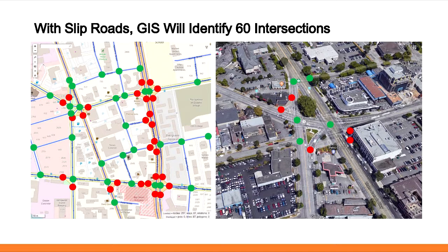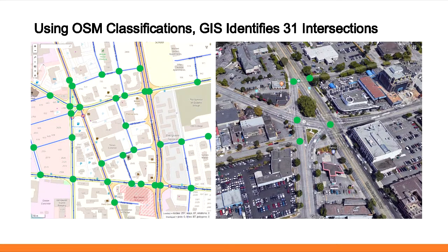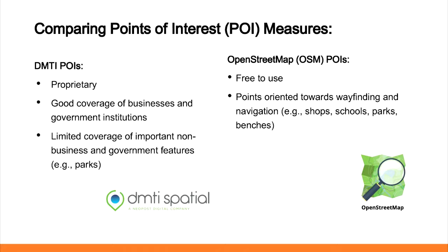These slip roads and turn lanes are actually proxies for car-friendliness — it's actually difficult to navigate this type of intersection as a pedestrian. We confound our measure when we keep these road segments in our estimation of intersection density, because it looks like a highly connected area when in reality it's quite difficult to navigate as a pedestrian. Using the OpenStreetMap road classification gives us 31 intersections versus 60 that we would have calculated before using either the Statistics Canada or DMTI dataset.